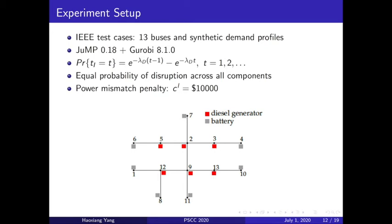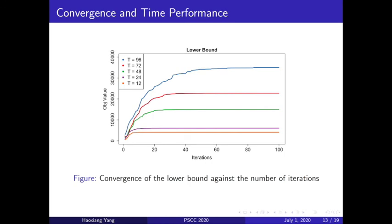Next, we are going to detail our computational experiment setup. We use an IEEE 13 bus case and a synthetic demand profile. We use JuMP 0.18 plus Gurobi 8.1.0 to model and solve the problem. You can see here we illustrate our test case. We set up some diesel generators and batteries so that every single time the disruption will not lead to some unrecoverable load shed or load unsatisfaction. We assume that in between two disruption occurrences the time follows a discretized exponential distribution and equal probability for all scenarios of disruptions. We penalize the potential power mismatch with a penalty cost of $10,000.